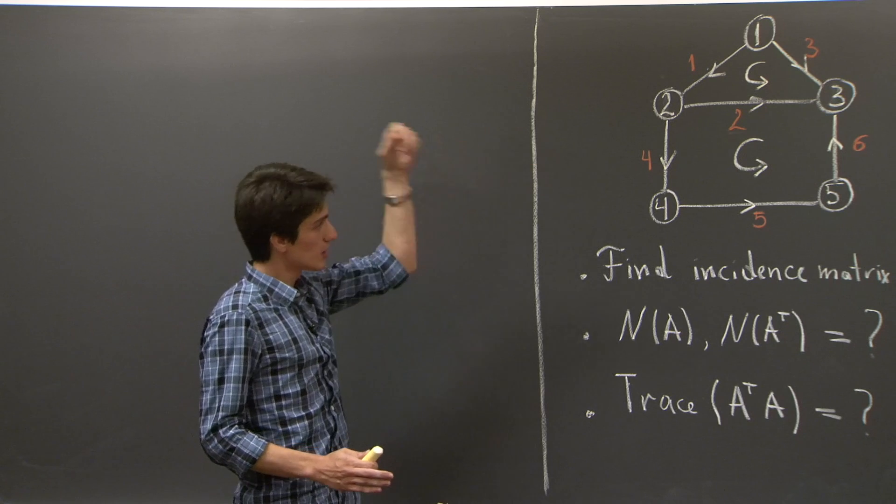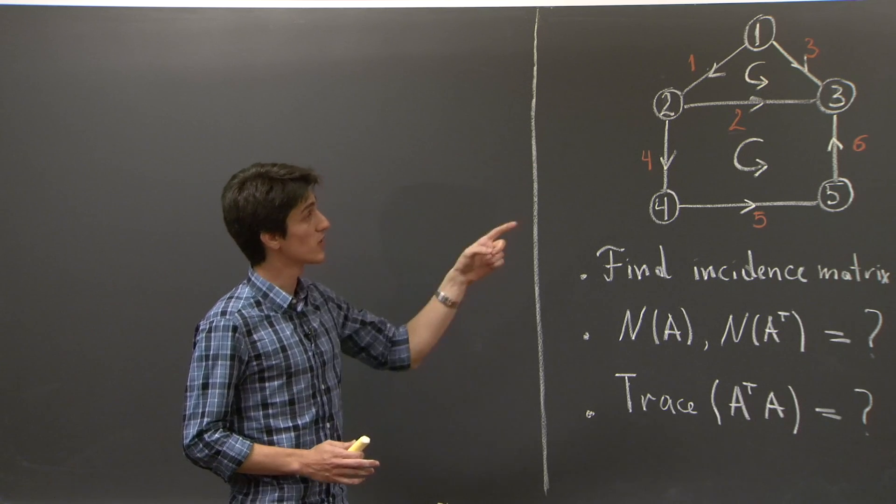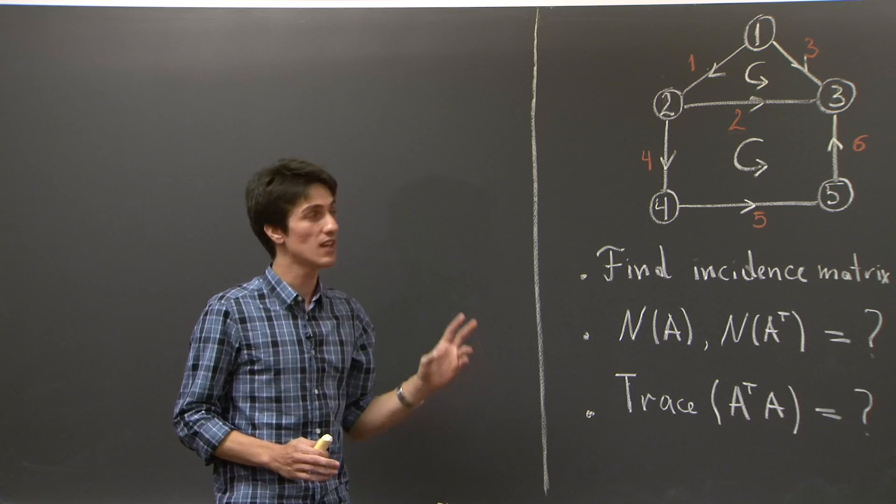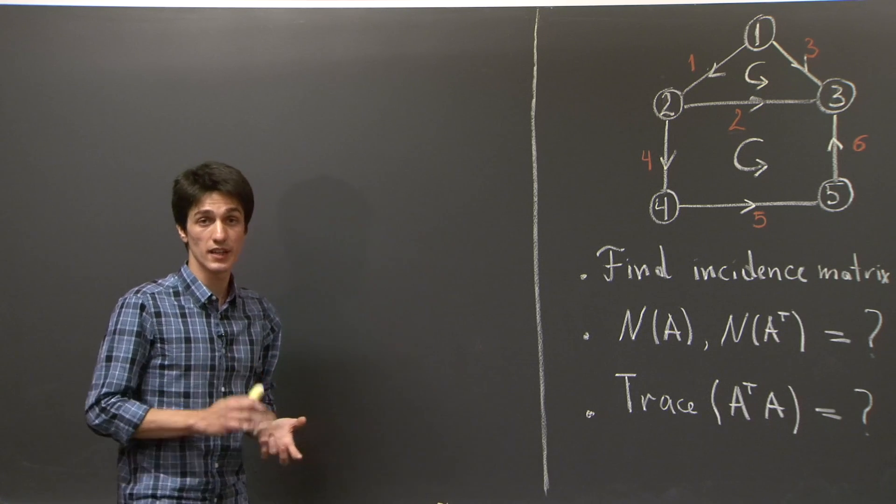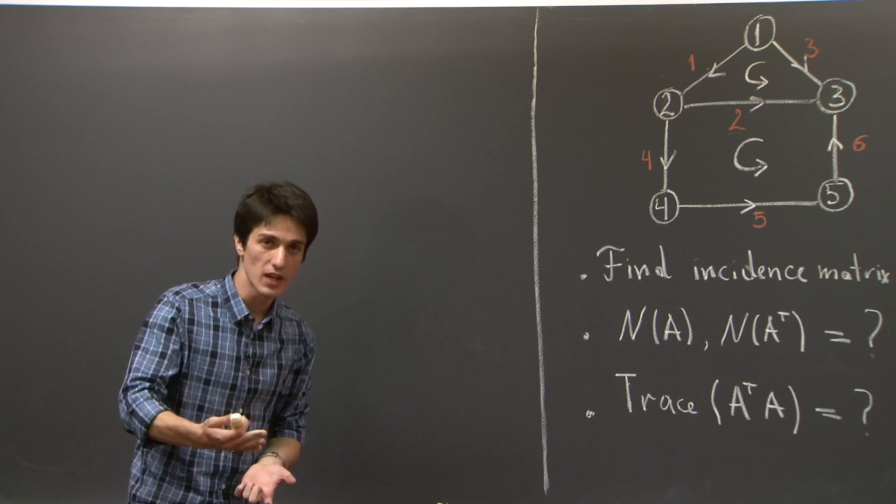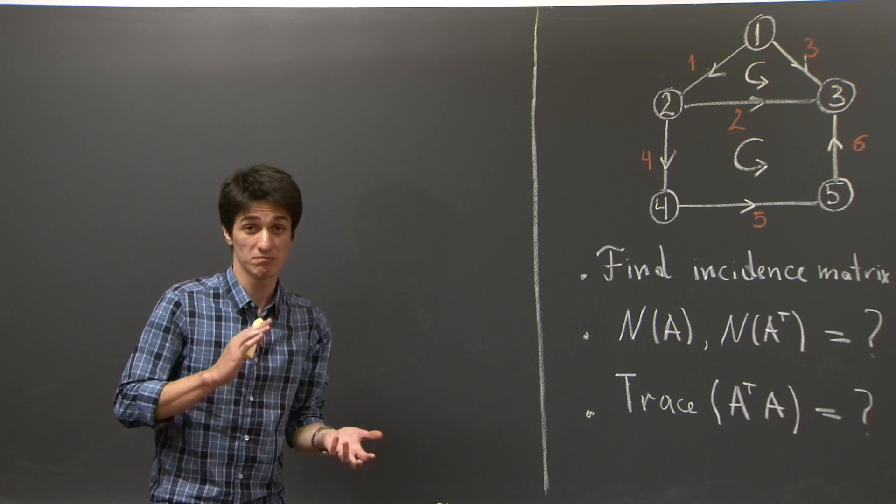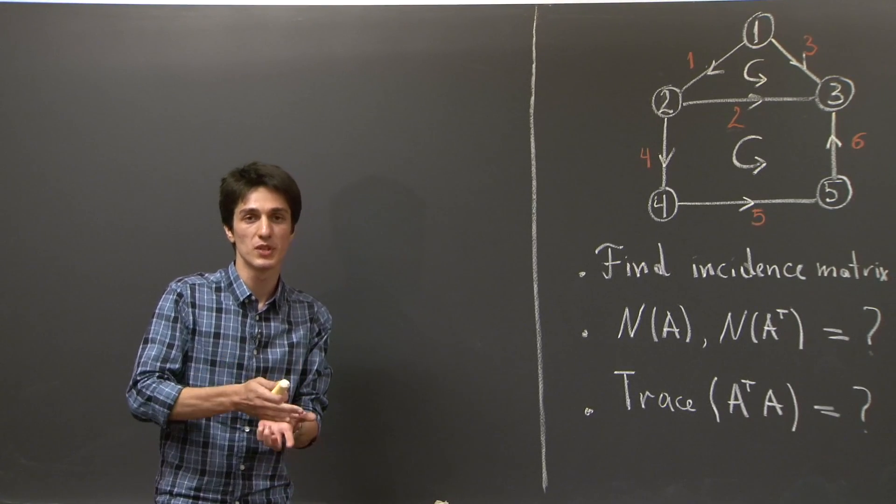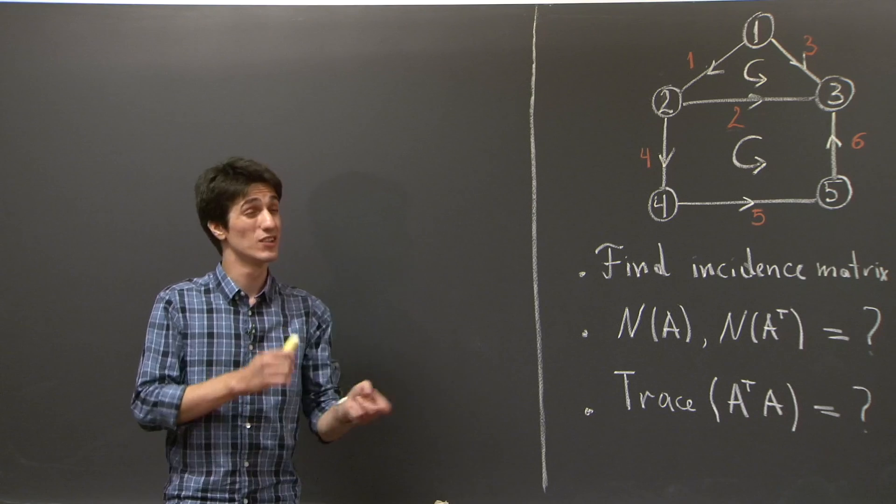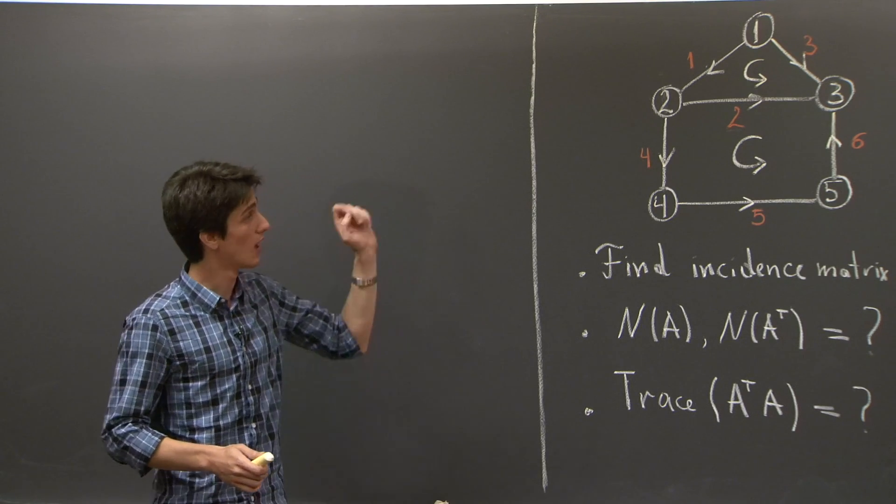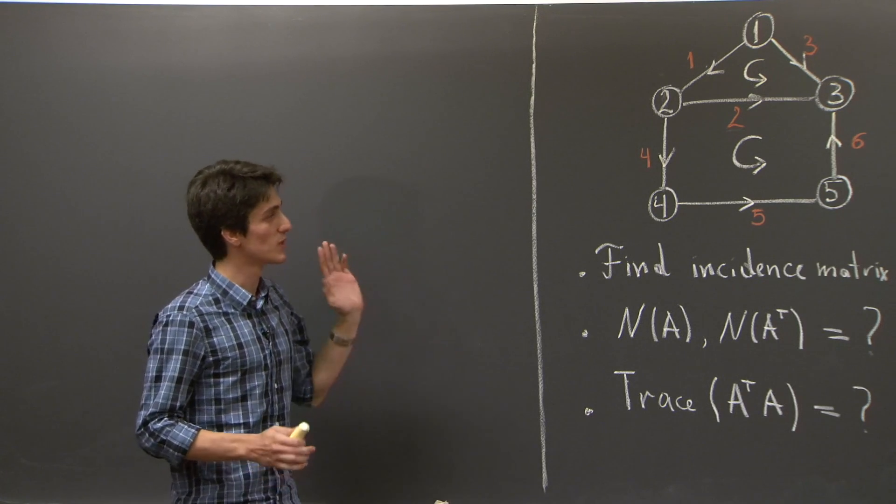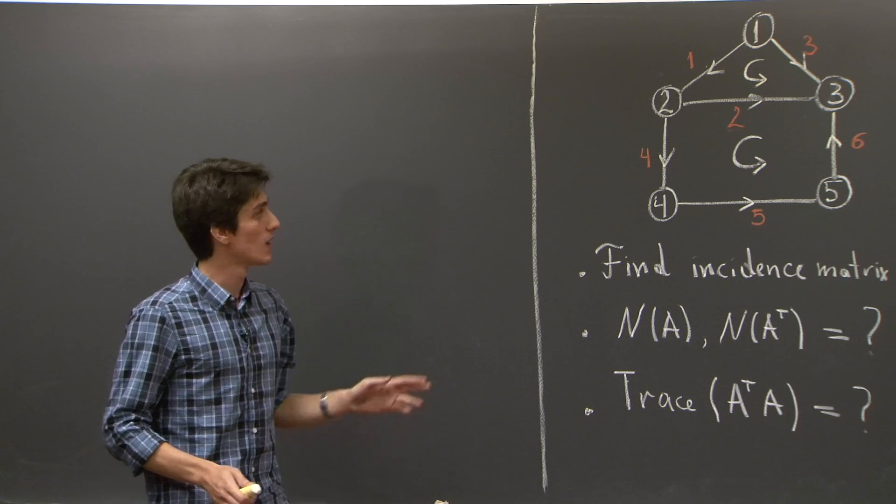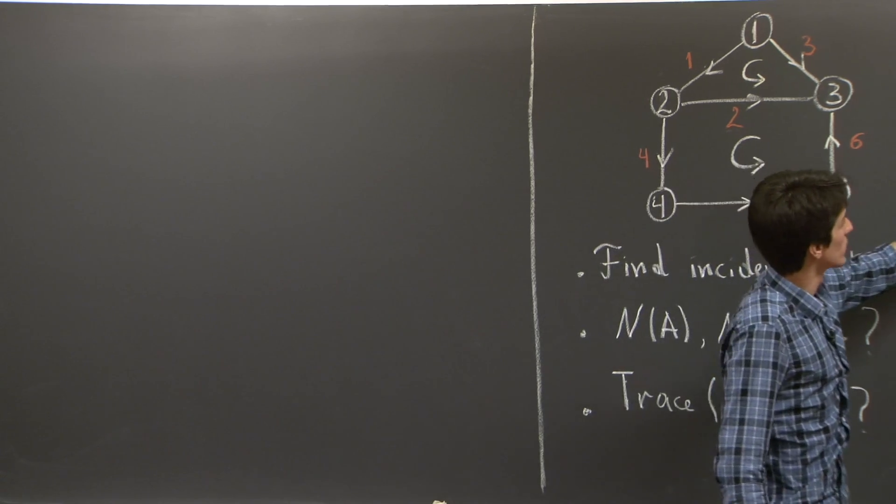Now, what is the magnitude squared of a column of an incidence matrix? Well, each column of the incidence matrix is either 1, negative 1, or 0. So, when we square these entries, we get 1's or 0's. And when we add them up, we get precisely a number which is the non-trivial entries in the column. So, the magnitude squared of the column is the number of non-trivial entries in it.